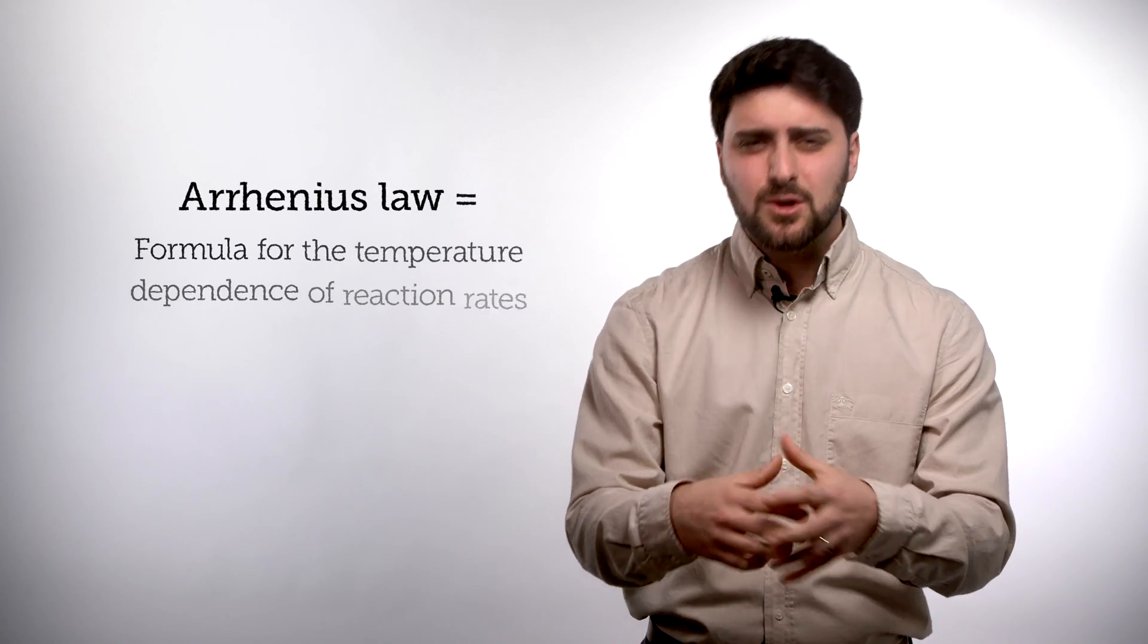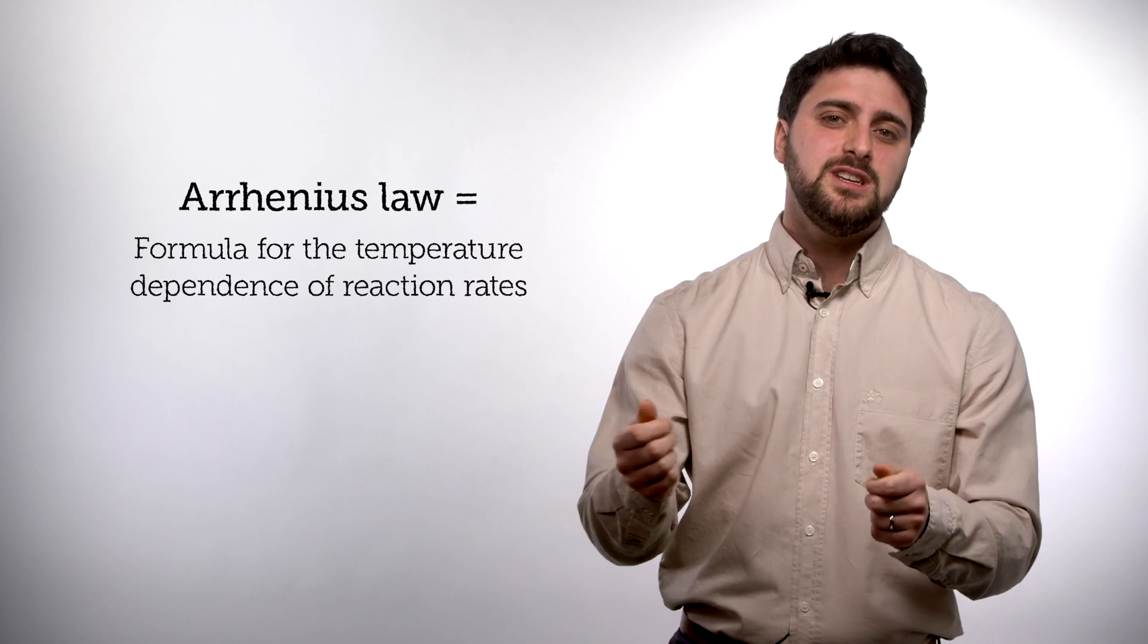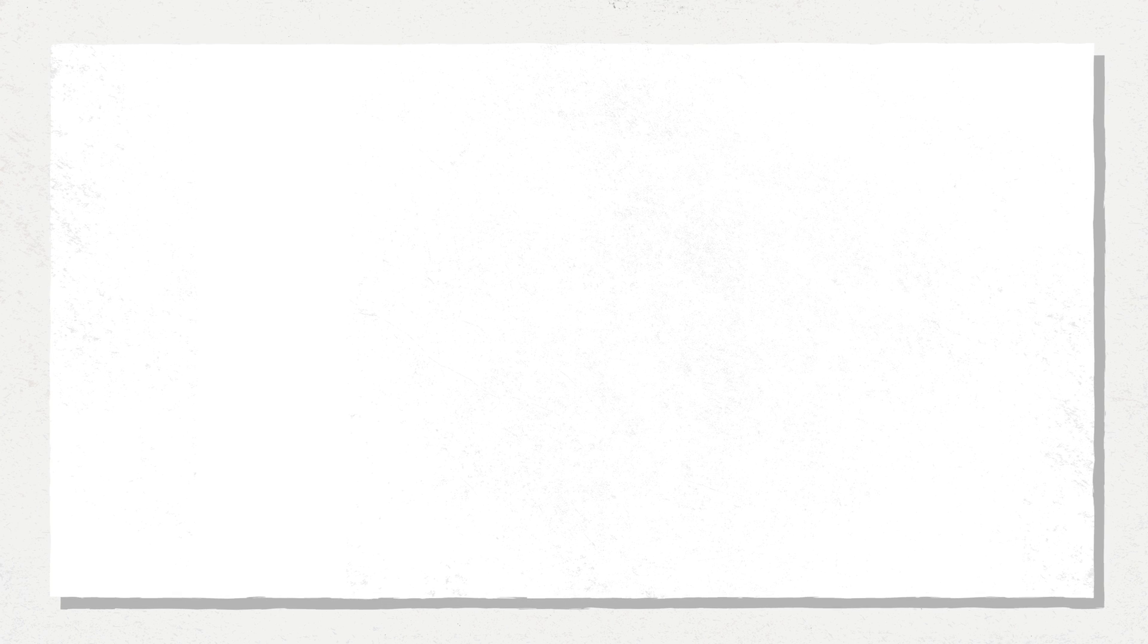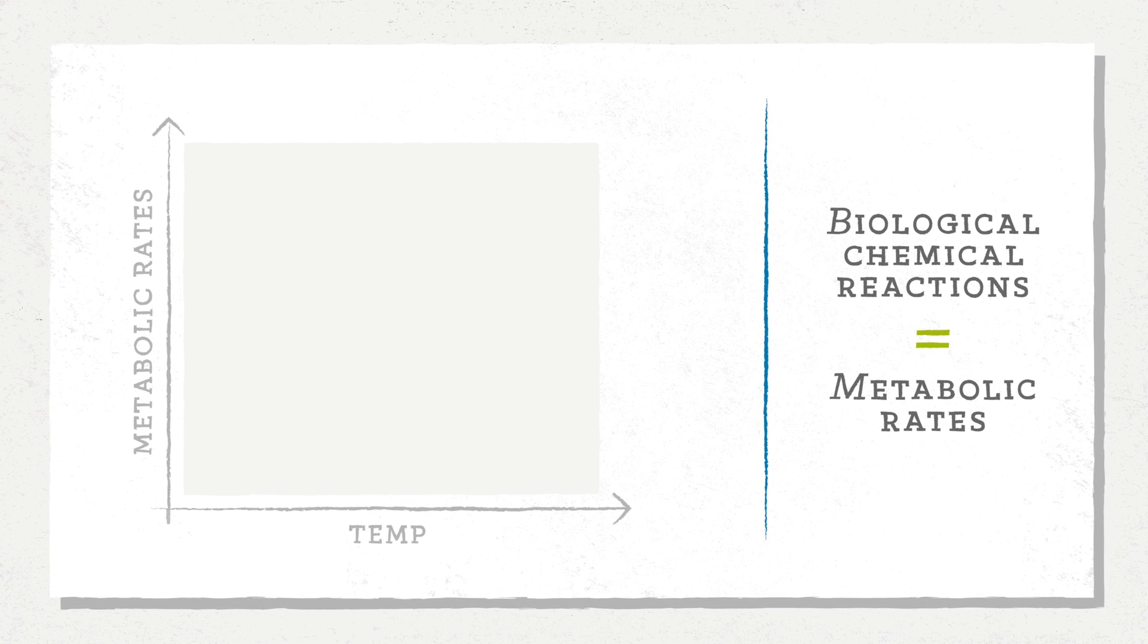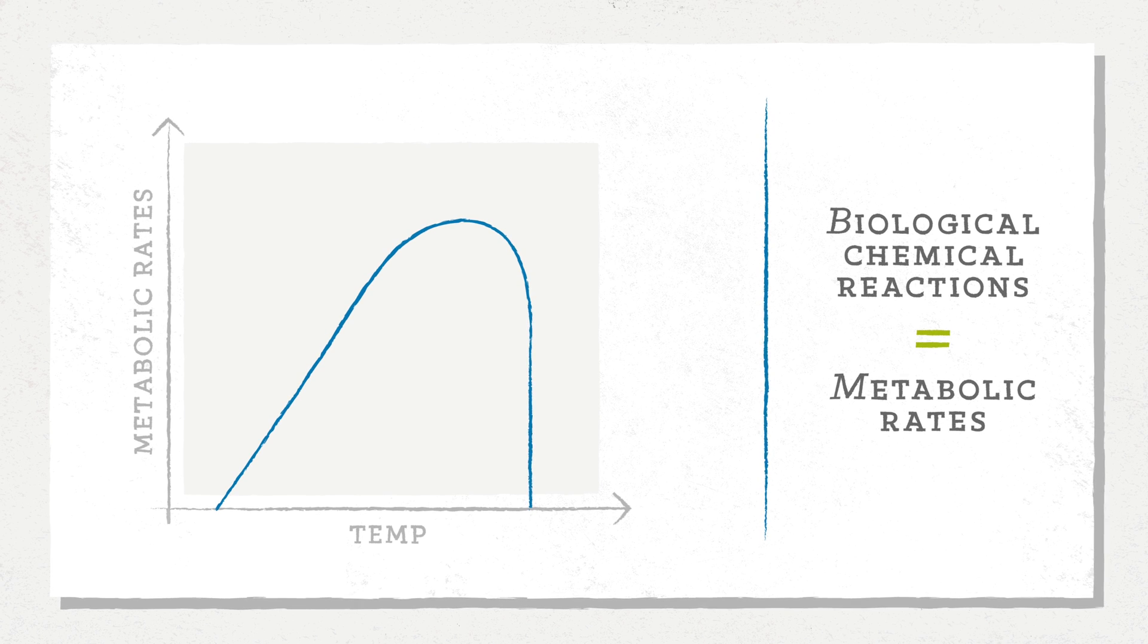And for a very simple reason - we organisms are just a collection of cells and cells are just bags of chemicals. Now chemicals react with one another and that reaction rate is strongly temperature dependent. That's called the Arrhenius law. So as temperatures increase, chemical reaction rates actually increase exponentially with temperature. Now biological chemical reactions, which we call metabolic rates, do increase with temperature at first and then eventually the rates decrease. And that's because the proteins, the enzymes that catalyze these reactions break down. They just cease to exist.